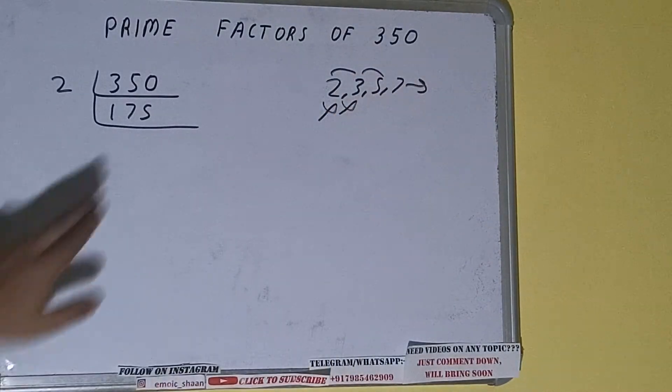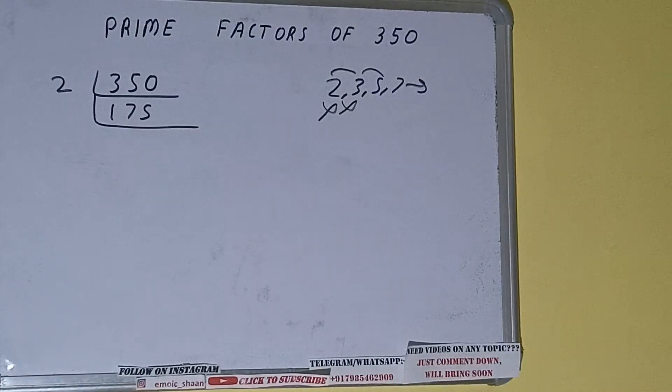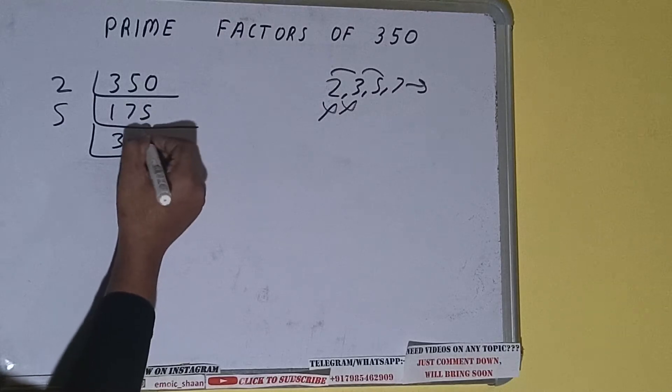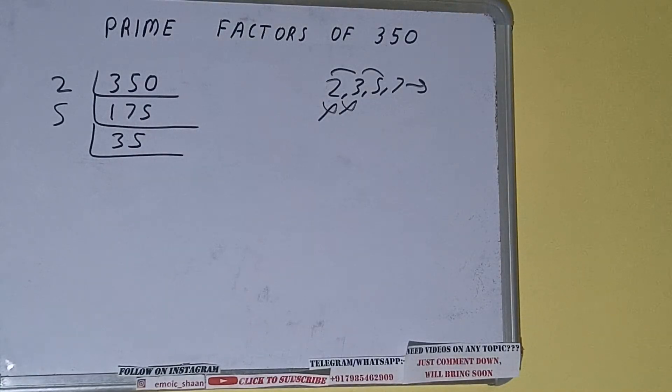Let's check with 5. The last digit is 5 so it is divisible by 5. So divide it and we'll be having 35.